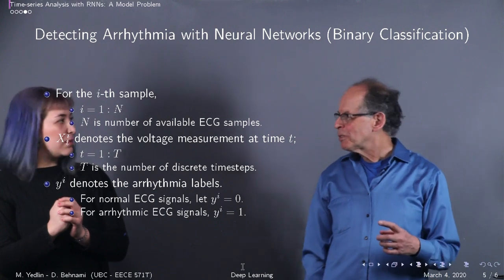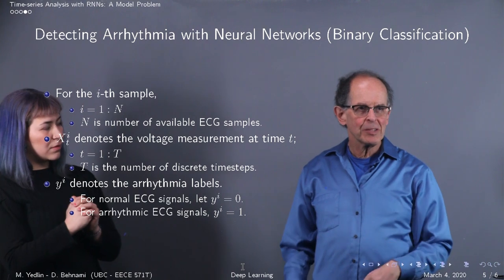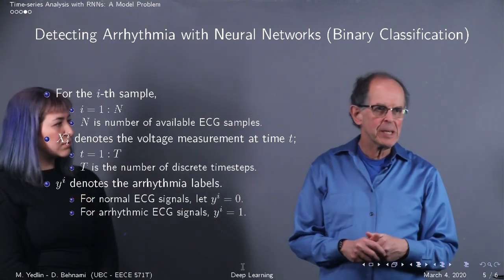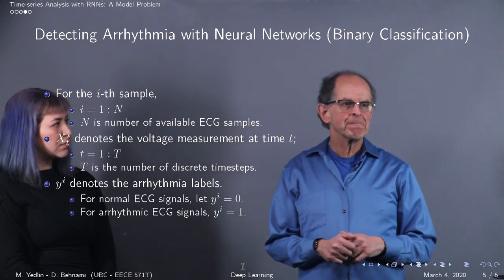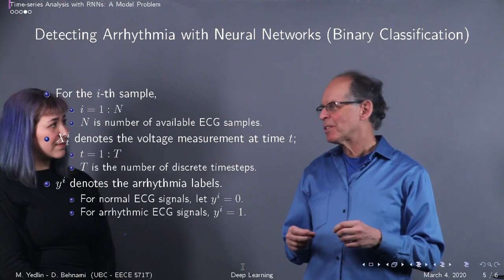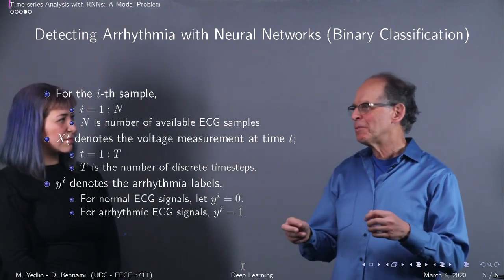So I have a question for you. We have the i-th EKG, that's the i-th sample that has N recordings equally spaced. What about the number of time steps in this?